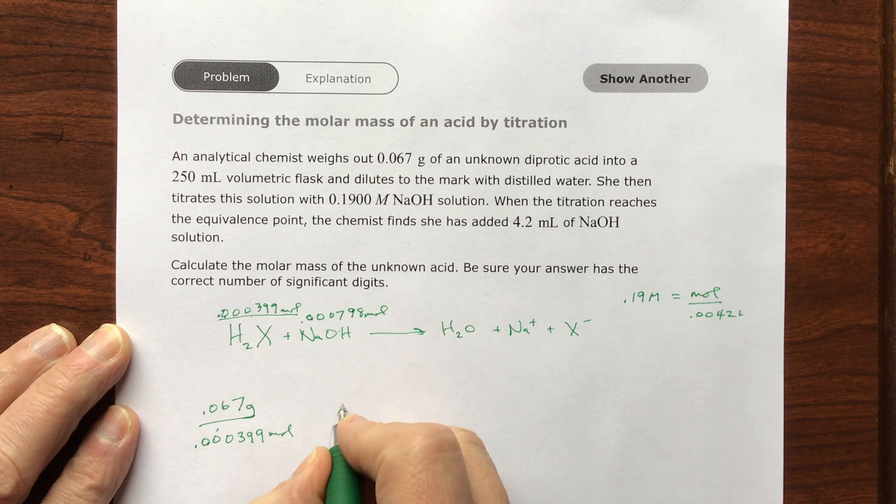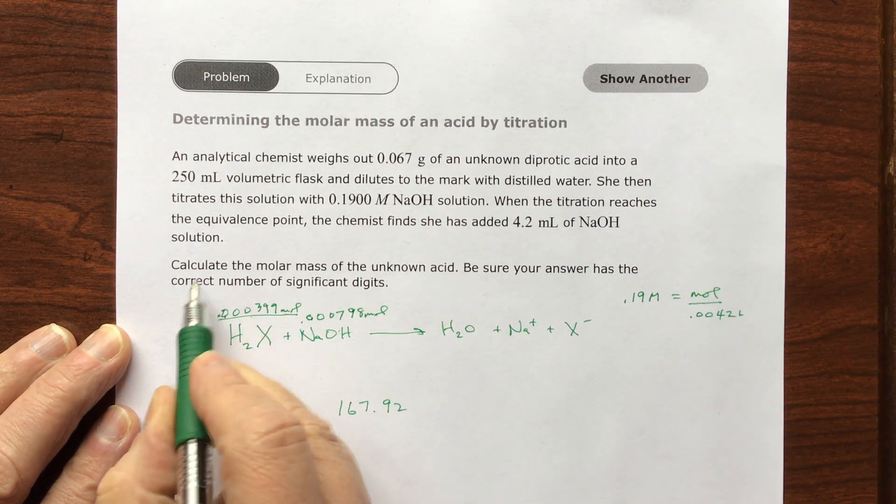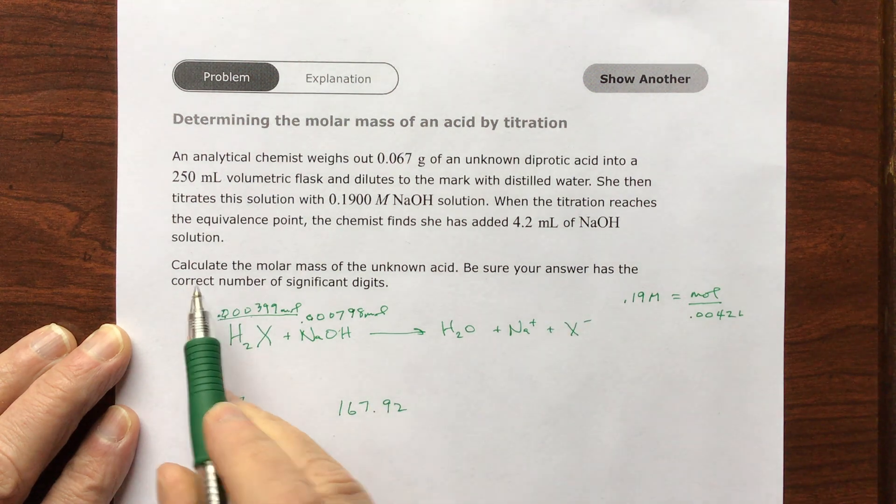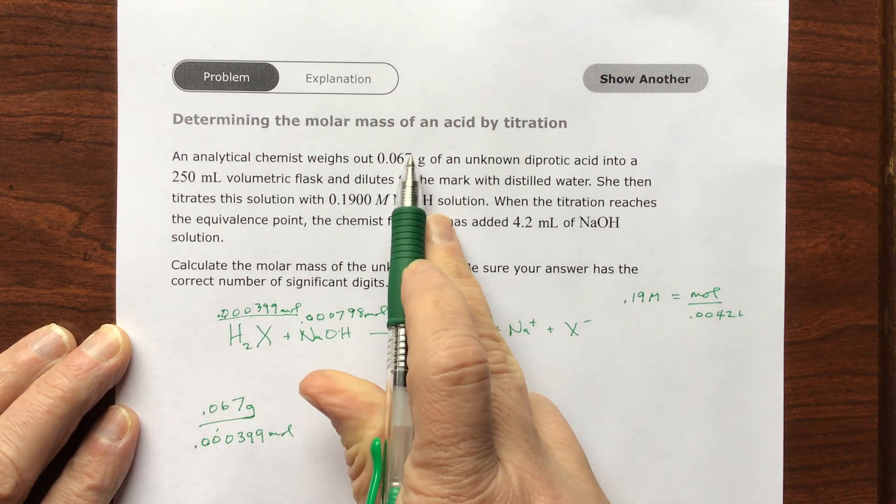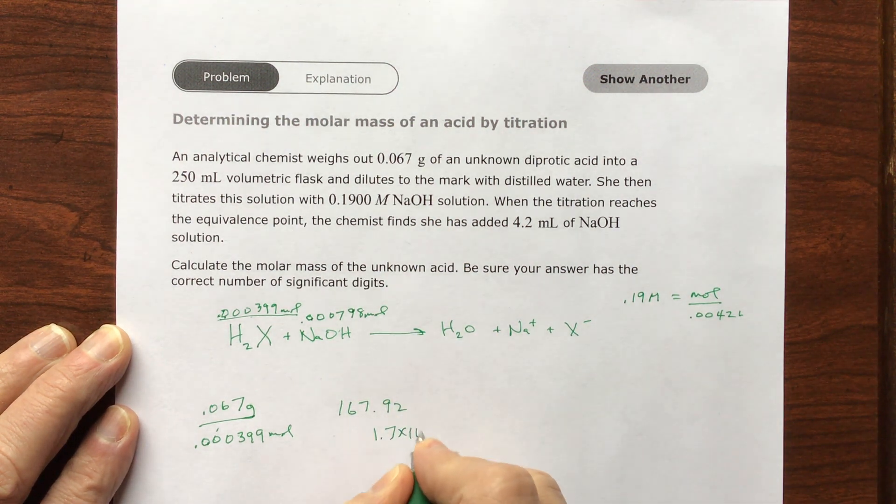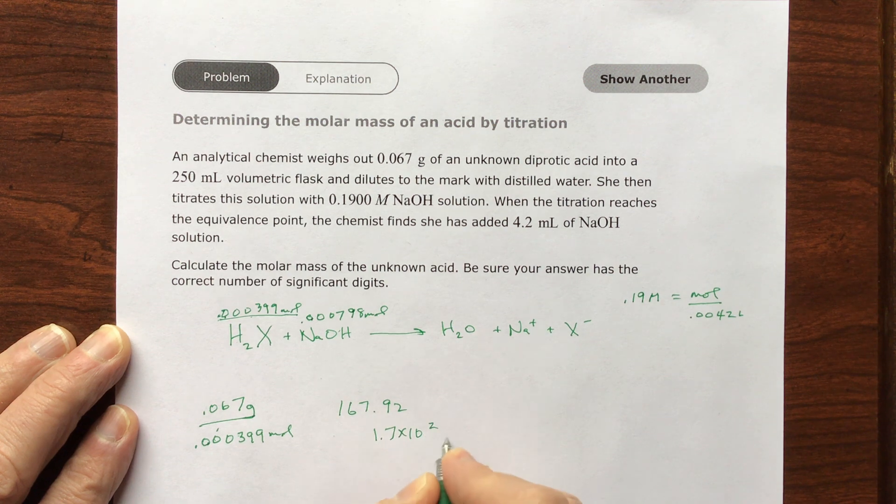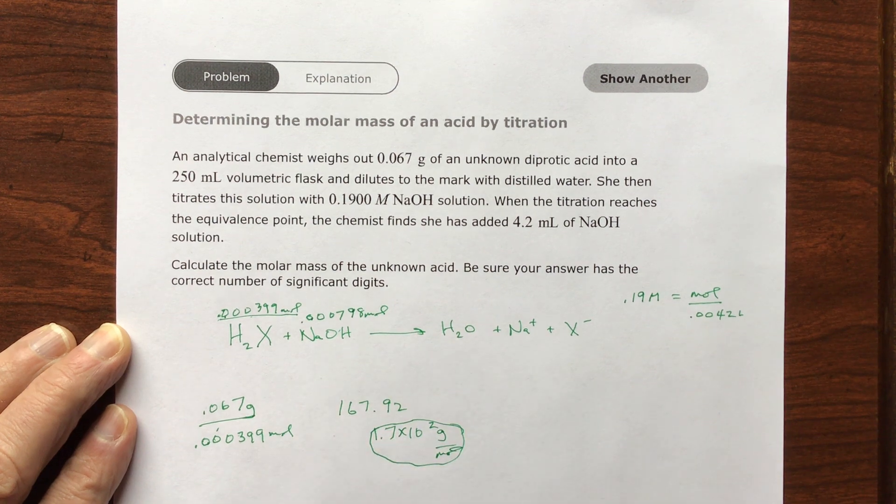So when I do the math, I get 167.92. It's asking for correct significant digits, so I have two significant digits here, I have two significant digits there, that means I'm going to need 1.7 times 10 to the two grams per mole, and that's my answer. I hope that helps.